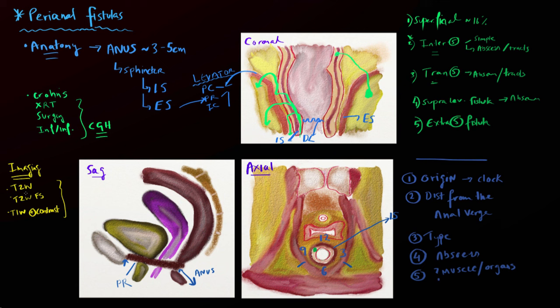We don't routinely use an endoluminal coil at our institution. In terms of angulating our planes, we want to do it with respect to the anus — axial planes and coronal planes relative to the anus. What we're really looking for is a rim-enhancing tract. On T2-weighted sequences there will be fluid inside the tract. On post-contrast T1-weighted sequences the tracts will enhance, but inside there will be no signal — and that's what you're looking for to define tracts. Where they close up and form more focal regions, those are essentially abscesses. We may or may not see gas within these collections or hemorrhage, depending on whether there has been any intervention.